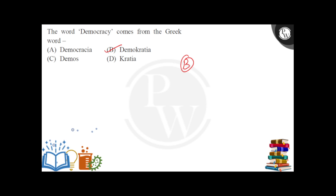This word has two parts: demo, which means people, and the other word is kratia, which means rule. So if you combine both words — demokratia — then it means rule by the people, people's rule.